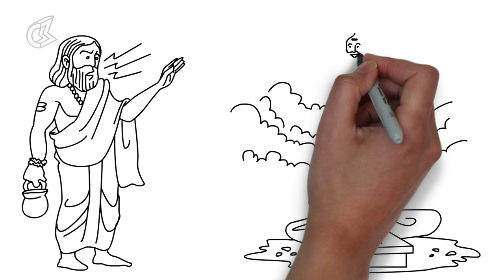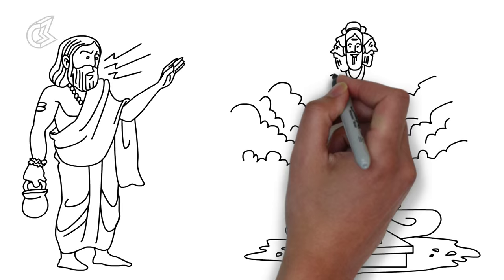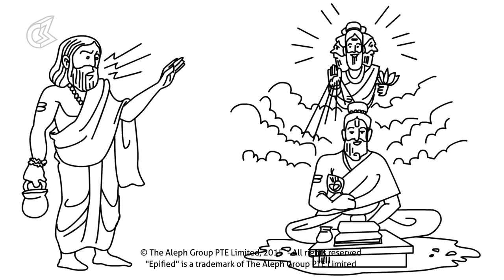Valmiki Jayanti is celebrated with great enthusiasm in Northern India where it is known as Parghat Divas. On this day, people remember the great sage who gave us the Ramayana.